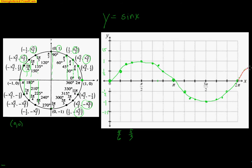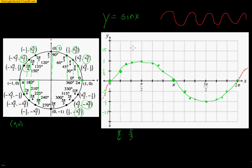We can continue going around the circle more and more, and this same pattern will continue — going back up to 1, back to 0, down to negative 1. We can also go around the circle backwards, going left into the negatives. The domain is negative infinity to positive infinity — there's no angle you can't plug in — and the output is always between negative 1 and 1.